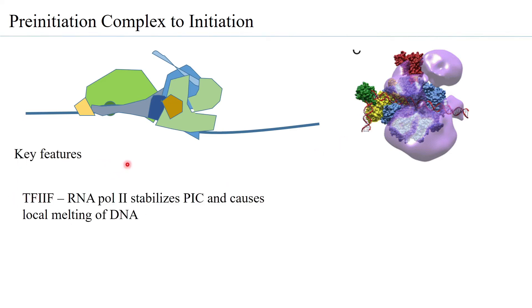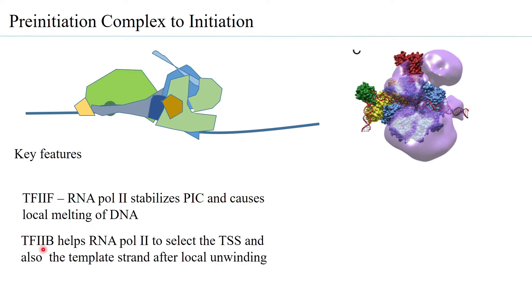The key features involved in the pre-initiation complex going to initiation are: first, TF2F–RNA polymerase 2 stabilizes the pre-initiation complex and, because TF2F can utilize ATP and has helicase activity, it causes a local melting of DNA. TF2B then helps RNA polymerase 2 to select the transcription start site and the template strand after the local unwinding.